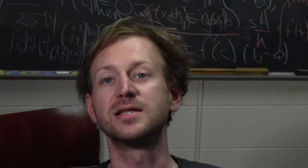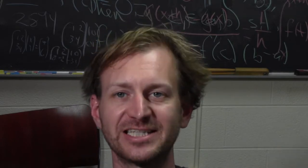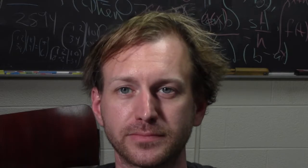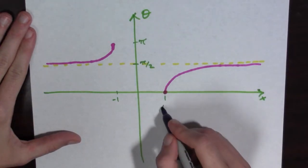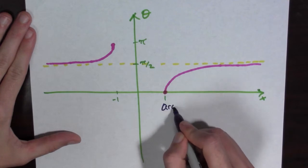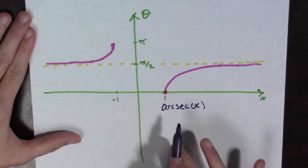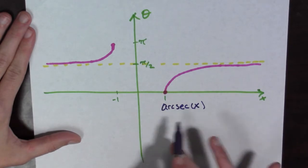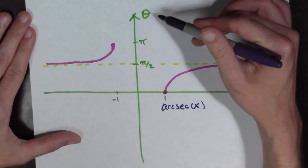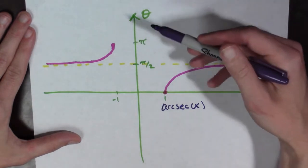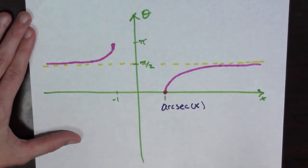Hello there. Now let's take the derivative of arc secant of x. Here we see a plot of arc secant of x. Arc secant takes in numbers and outputs angles. It's traditional to write y up here, but I've written theta to help us remember that arc secant outputs angles.